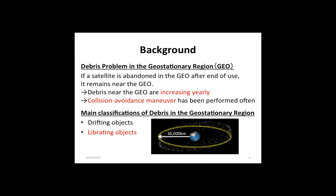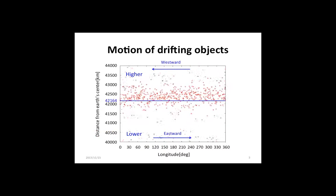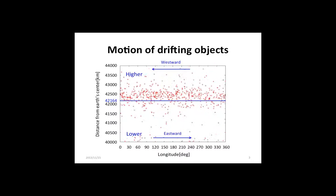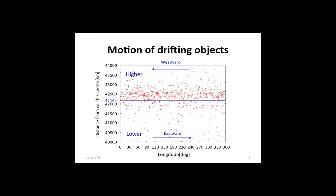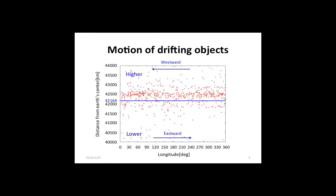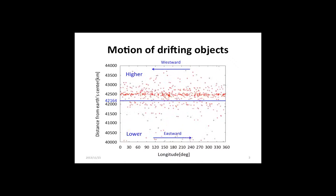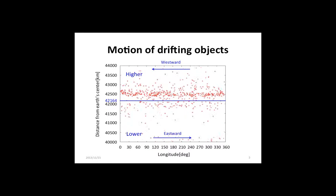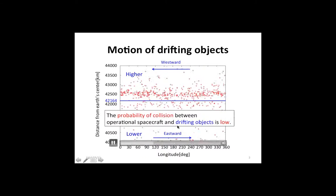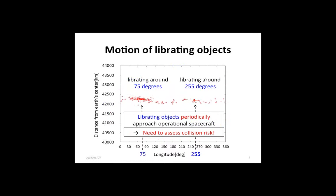Catalog debris in the GEO are grouped into two major classes: drifting objects and vibrating objects. The vertical axis shows the distance from the Earth's center and horizontal axis shows longitude. Drifting objects move eastward or westward as observed from the ground. Since the altitude of drifting objects is higher or lower than that of operational spacecraft, the probability of collision between operational spacecraft and drifting objects is low. Vibrating objects are vibrating around 75 degrees east longitude, 255 degrees east longitude, or both longitudes, known as stable points.